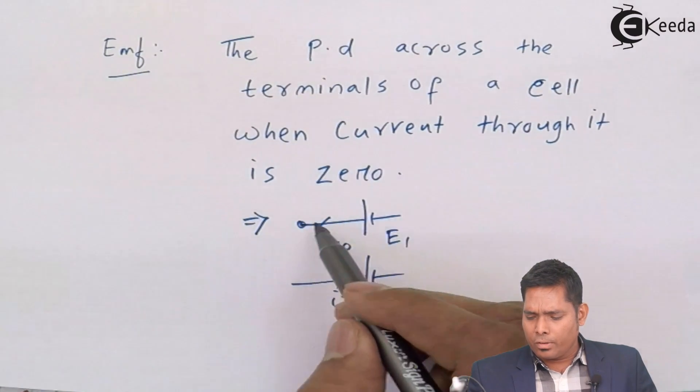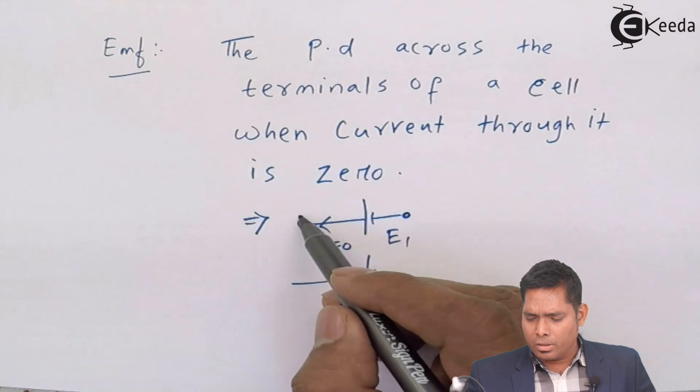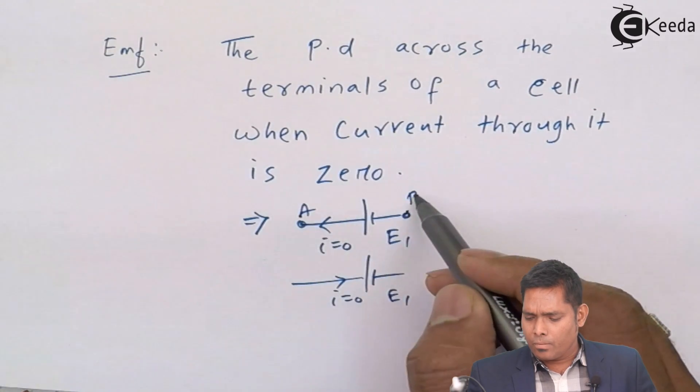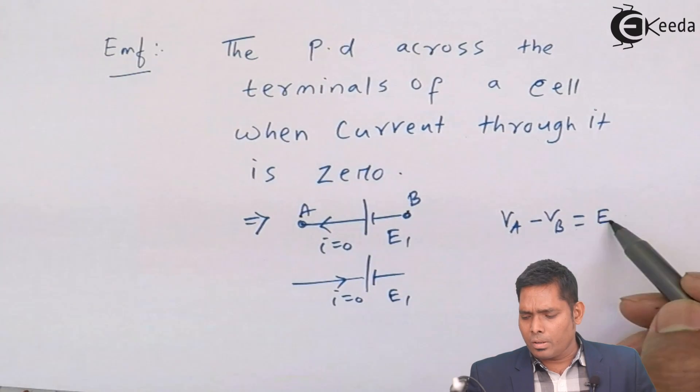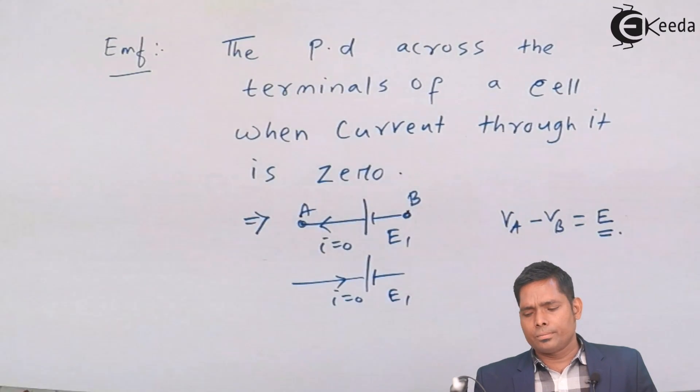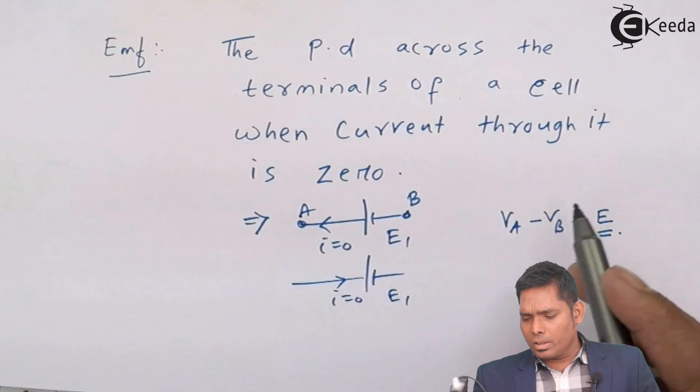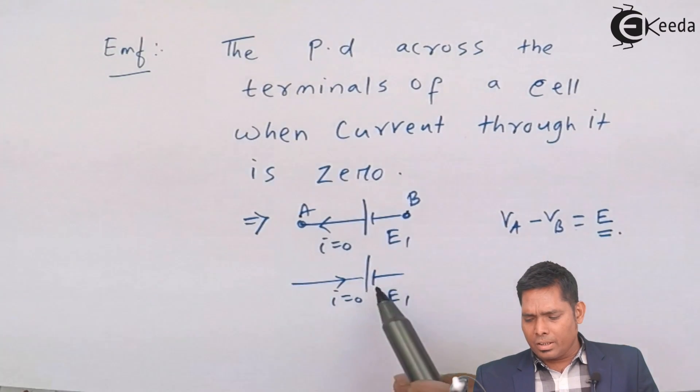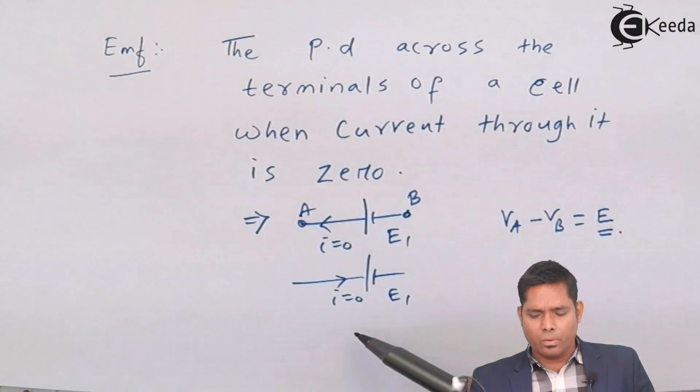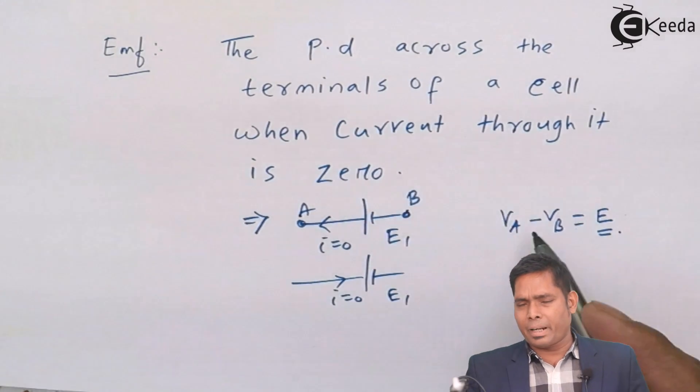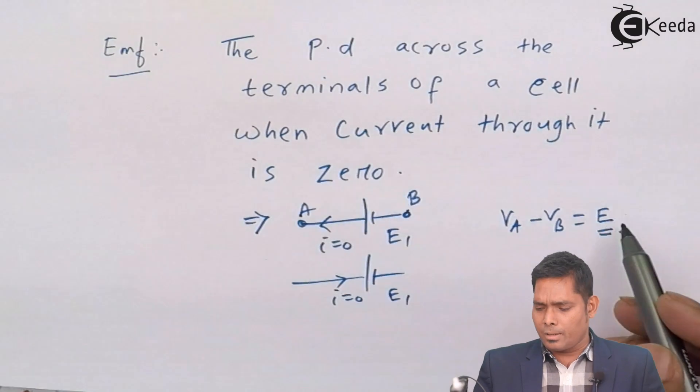Then the potential difference measured here. Suppose this point is A and this point is B. Now the potential difference VA minus VB is equal to the EMF of the cell. So this obviously can be plus and minus depending on which direction the current is flowing. But the basic magnitude is that is the EMF of the cell.